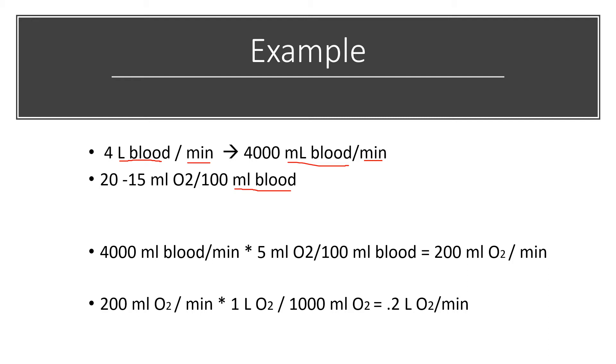Then we can multiply the 4,000 milliliters of blood per minute times the 5 milliliters of O2 per 100 milliliters of blood. This is because we are looking at the difference between 20 and 15, which gives us a value of 5.